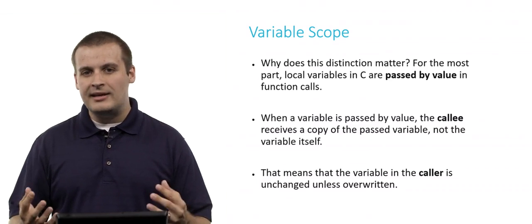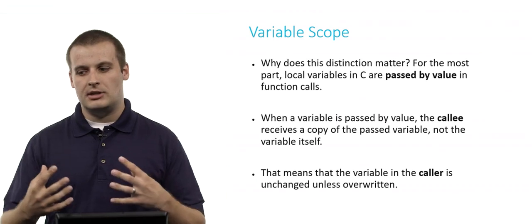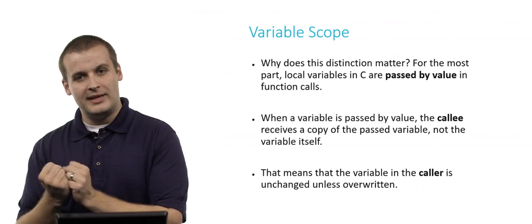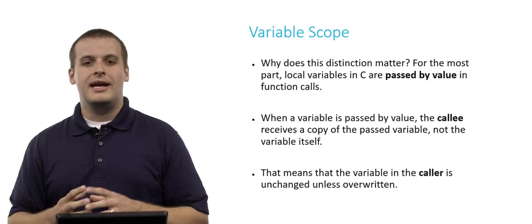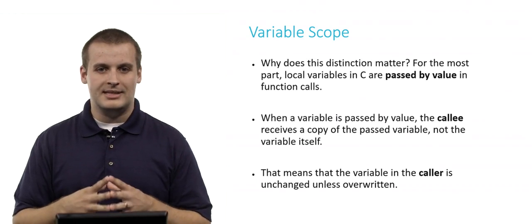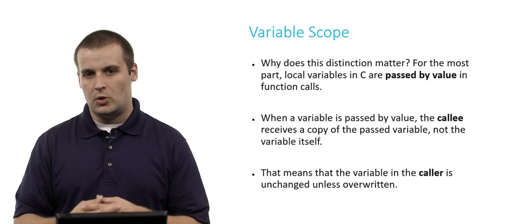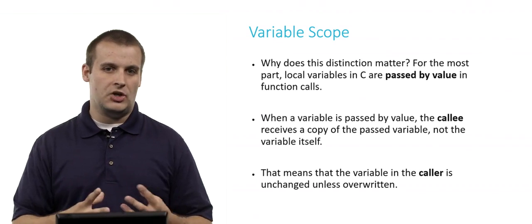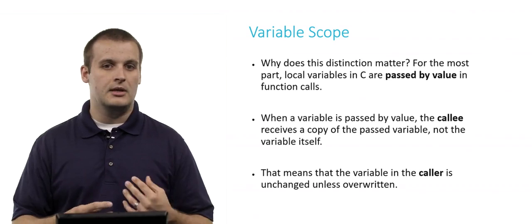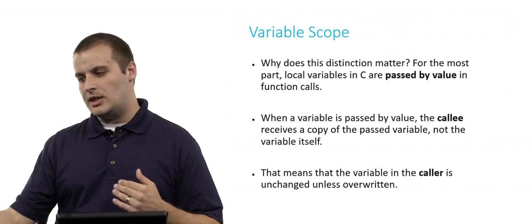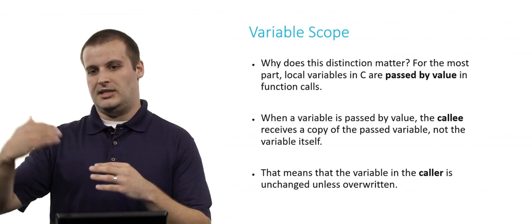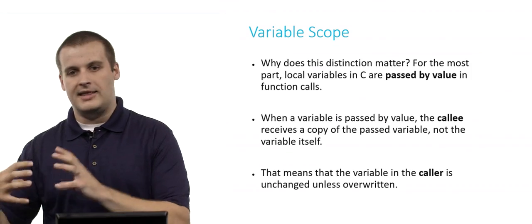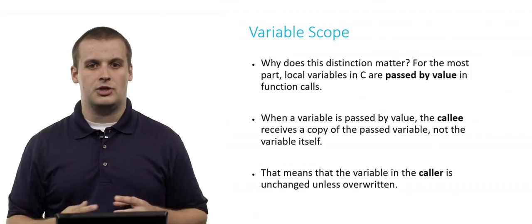the callee, which is another way of saying the function that is receiving the variable that gets passed in as an input, it actually doesn't receive that variable itself. It receives its own copy of it to work with. This is a really important distinction. We just saw a second ago that with global variables, if we manipulate the global variable in one function, the effect in that one function carries through to every other function.